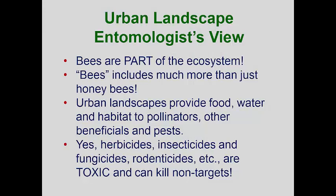As an entomologist, I try to take a wider view of what may be going on. I heartily acknowledge that bees are an important part of our ecosystem, but when I say bees, I am including all the bees, not just the domesticated honeybee. We have already discussed the problems with complex urban environments, and our urban environments can easily provide food, water, and nesting habitat for our pollinators. But this doesn't mean that we can't do a better job of providing these necessities. And there is no doubt that pesticides, by their very nature, are designed to kill things, and if we don't use them properly, we can kill non-targets like bees.